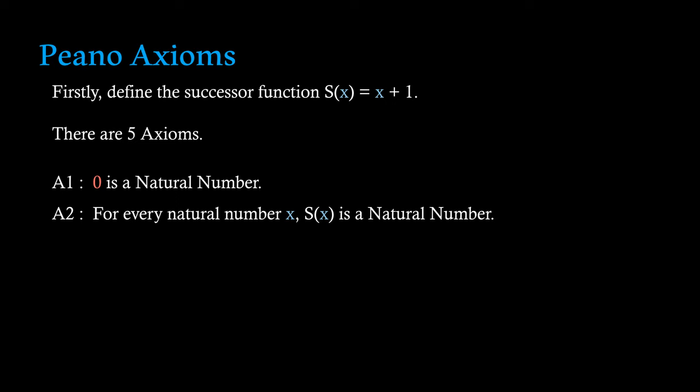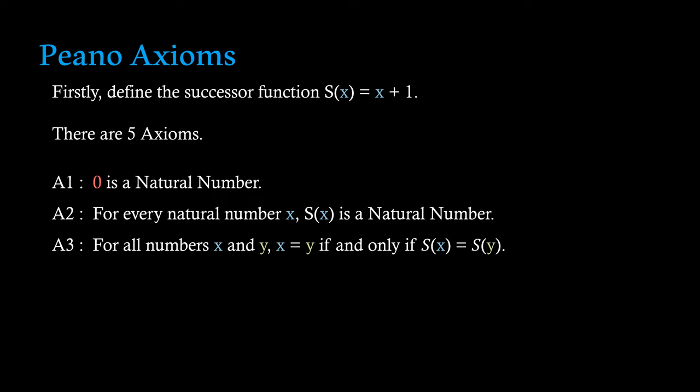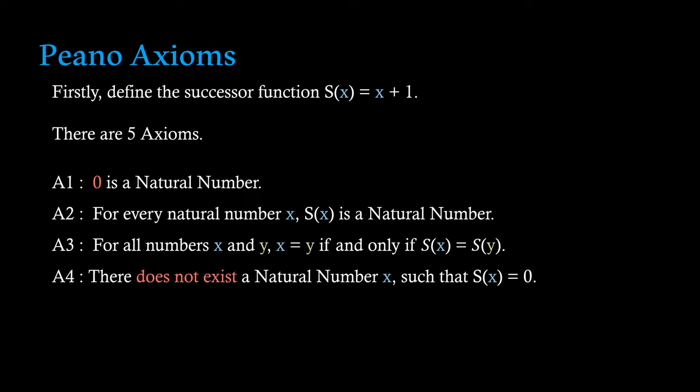The third axiom is to do with equality. This just states for all numbers x and y, x equals y if and only if the successor of x equals the successor of y. The fourth axiom states that there does not exist a natural number x such that the successor of x equals zero. This is quite inevitable, as obviously zero being the first number, it can't succeed anything.